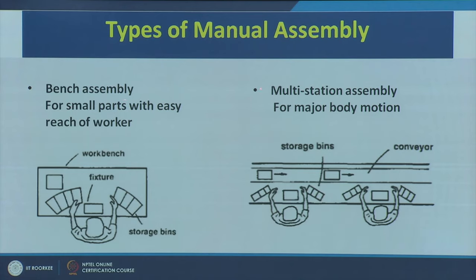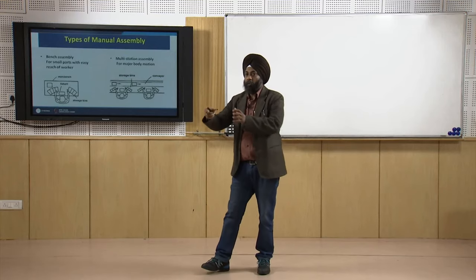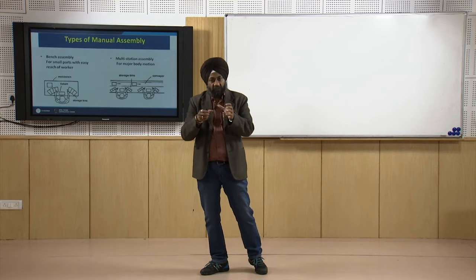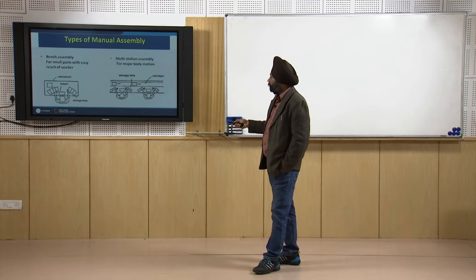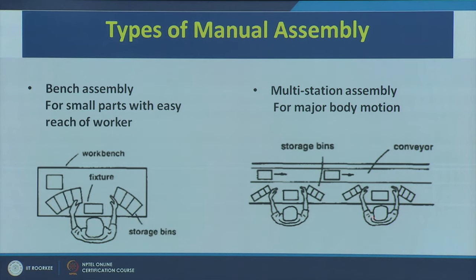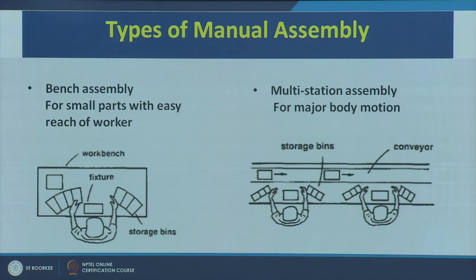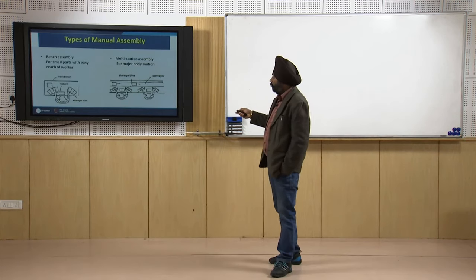The second type is multi-station assembly, where the product moves on a conveyor belt and workers perform their operations as it passes. Each worker has their own storage bins; they take components, perform their portion of the manual assembly, and the product moves to the next worker who performs the required operations. This type involves major body motion and is suited for larger products assembled in sequence.